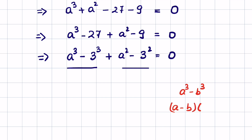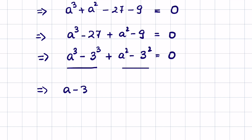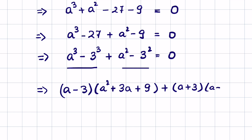The formula for a cube minus b cube is (a minus b)(a square plus ab plus b square), and the formula for a square minus b square is (a plus b)(a minus b). So applying these: a cube minus 3 cube gives (a minus 3)(a square plus 3a plus 9), and a square minus 3 square gives (a plus 3)(a minus 3), all equal to 0.